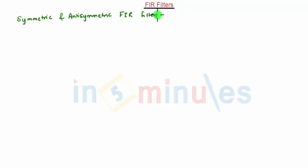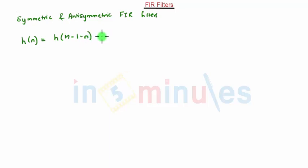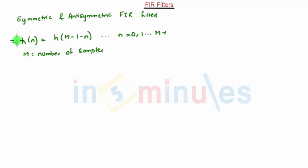The conditions are dependent on the unit sample response h. The unit sample response of an FIR filter is symmetric if it satisfies the condition h(n) = h(M-1-n), where n ranges from 0 to M-1. Here M is the number of samples. When this condition is satisfied, the filter is symmetric.